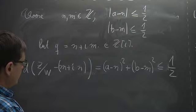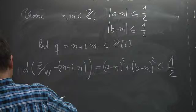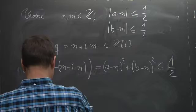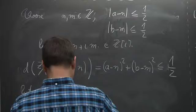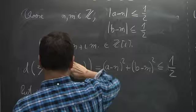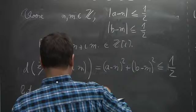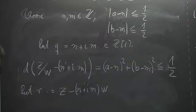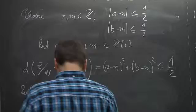We put the remainder r equal to z minus (n + im) times w. So we can write z equals (n + im) times w plus r, which is our division with remainder.